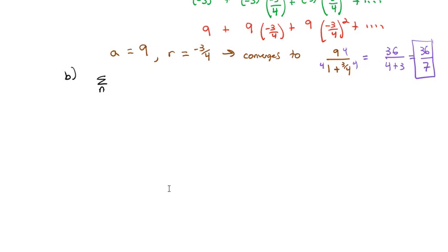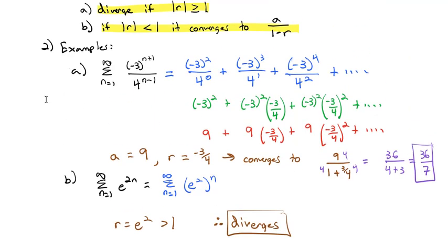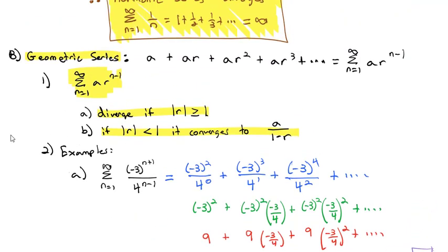Compare that to the sum as n goes from 1 to infinity of e to the 2n. We can rewrite e to the 2n as e squared to the n power, so this is the sum as n goes from 1 to infinity of e squared raised to the n. Each term is being multiplied by e squared over and over — the ratio is e squared. The problem is e squared is greater than 1. Whenever the ratio is greater than 1, the entire series diverges to infinity. So the geometric series diverges if the absolute value of the ratio is greater than 1, and converges if it's less than 1.